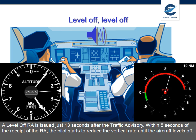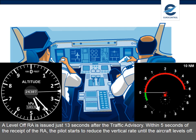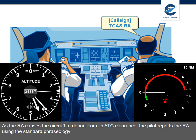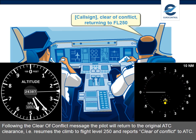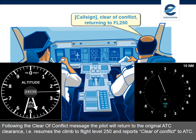The Level Off RA is issued just 13 seconds after the Traffic Advisory. Within 5 seconds of the receipt of the RA, the pilot starts to reduce the vertical rate until the aircraft levels off. As the RA causes the aircraft to depart from its ATC clearance, the pilot reports the RA using the standard phraseology. Following the Clear of Conflict message, the pilot will return to the original ATC clearance, i.e. resumes the climb to flight level 250 and reports Clear of Conflict to ATC.